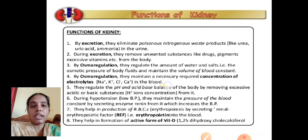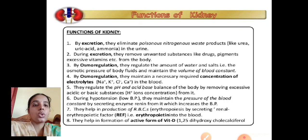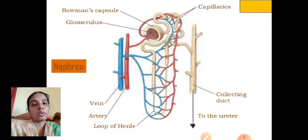The kidneys regulate the pH and acid-base balance of the body by removing excess acidic and basic substances. During hypotension (low BP), they maintain blood pressure by secreting an enzyme called renin, which increases BP. They help in the production of RBCs (erythropoiesis) by secreting erythropoietin into the blood, and they are helpful in the formation of the active form of vitamin D.